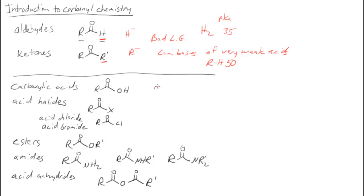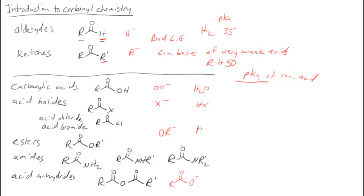By comparison, in the second category: carboxylic acids have OH⁻ as the leaving group; acid halides have X⁻ as the leaving group; esters have OR⁻ as the leaving group; and acid anhydrides have a carboxylate as the leaving group. We look at the pKa of the conjugate acids to assess leaving group ability. The conjugate acid of OH⁻ is water (pKa ≈ 15.74), of X⁻ is HX (pKa ≈ −7 to −10), of OR⁻ is an alcohol (pKa ≈ 15), and of carboxylate is a carboxylic acid (pKa ≈ 4–5).